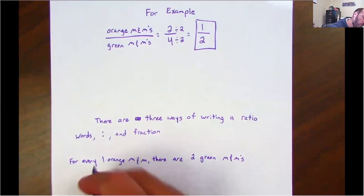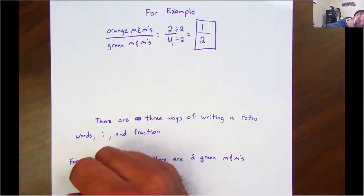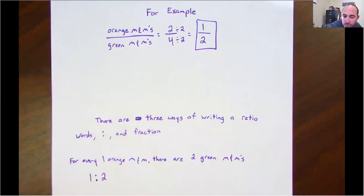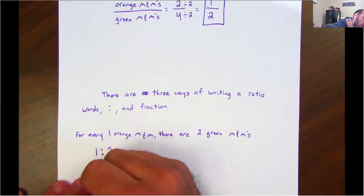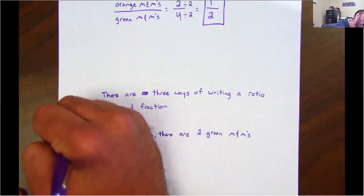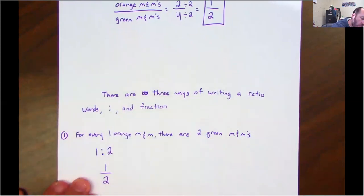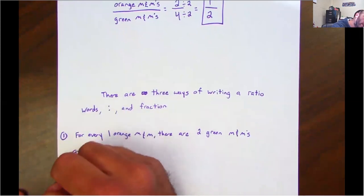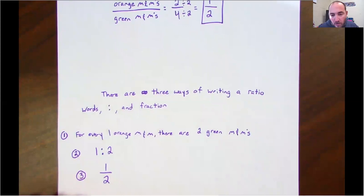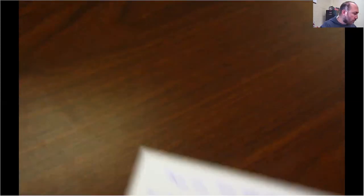How would you write it with a colon? One to two. And as a fraction. So here's one way of writing it, two ways of writing it, three ways of writing it. Let's do another example.